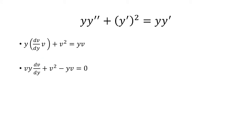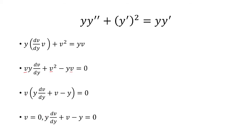Finally, I can multiply this out. The y times dv over dy times v is just vy dv over dy. Then I subtract yv from both sides. They both have a factor of v, so I can pull that out. So I have two things being multiplied — like a times b equals zero — meaning v equals zero or whatever's inside the parentheses equals zero.